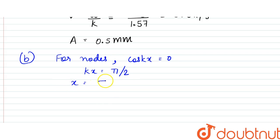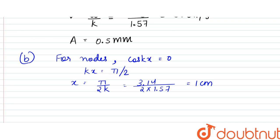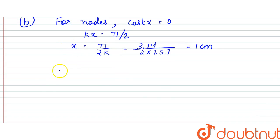So, that means kx is equal to π by 2 or multiple of that. So, x from here turns out to be equal to π by 2k, which is equal to 3.14 divided by 2 into 1.57, which is equal to 1 centimeter. So, that is the smallest positive x at t equals 0, where we get the node.